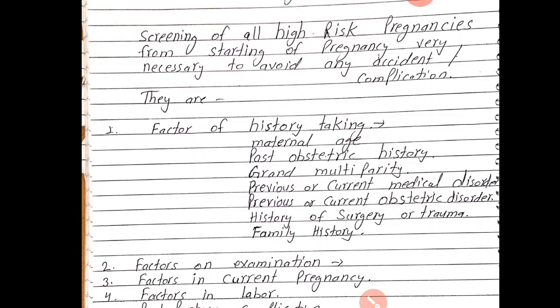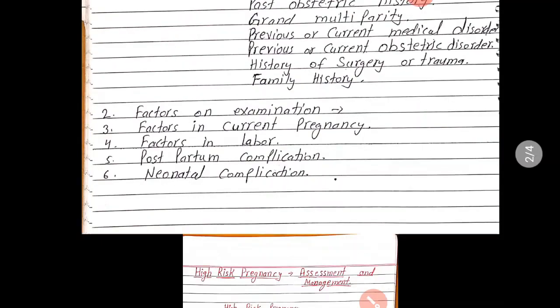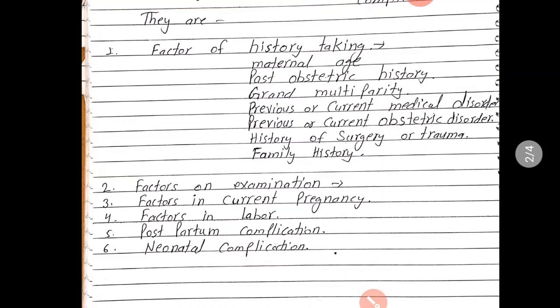Then factors on examination: examination mein kya kya dekhenge — short stature, matlab patient ki height less than 145 cm ki agar ho to woh bhi ek high risk pregnancy ke andar aati hai. Ya phir underweight ho, ya phir obese ho — yaani BMI more than 30 kg per meter square ho.